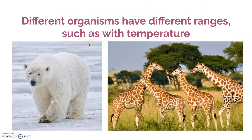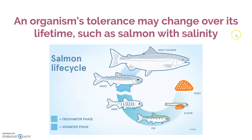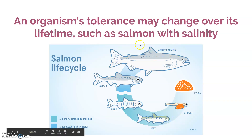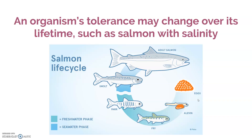Different organisms can have different ranges. For example, polar bears have an optimum temperature range at really cold temperatures and would not do well in high temperatures, unlike giraffes, whose tolerance range is higher on the temperature spectrum. Also, over time, an organism's tolerance can change — for instance, salmon start life in freshwater, move into saltwater, then return to freshwater to lay their eggs, so their tolerance range can vary within their own lifetime.